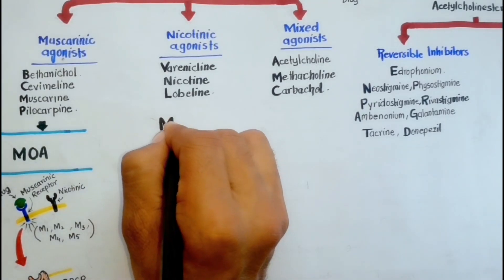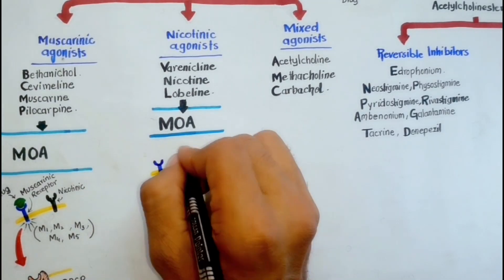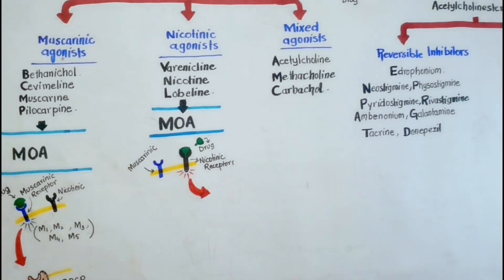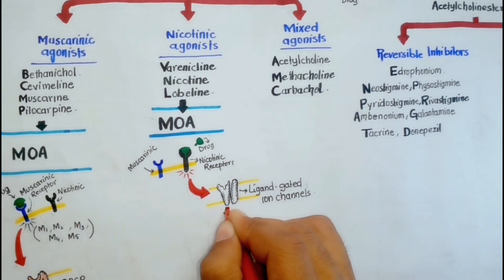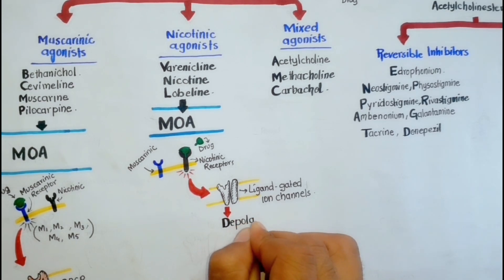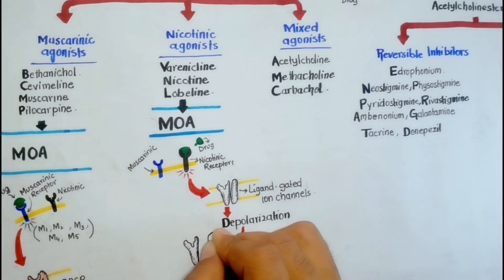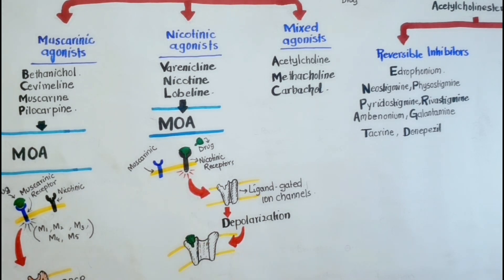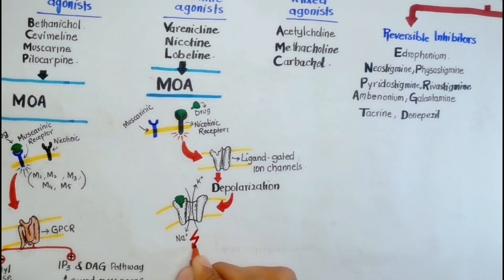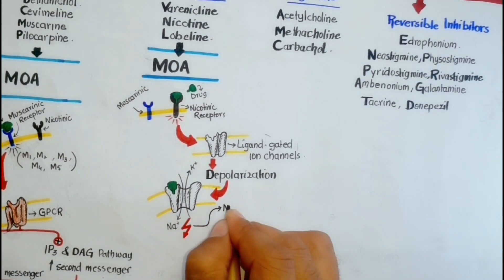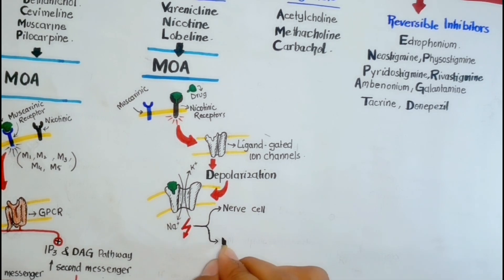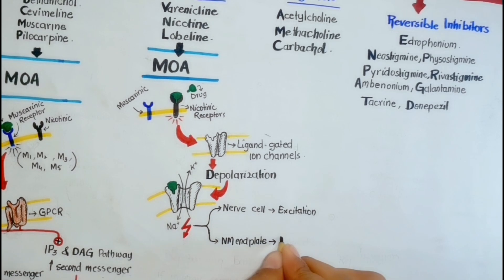In the case of nicotinic agonists, which act on nicotinic cholinoceptors only — which are ligand-gated ion channels — when an agonist binds to them it results in depolarization of the post-synaptic site. Nicotinic agonists open up the ion channels linked with these receptors, through which sodium and potassium ions diffuse rapidly down their concentration gradients, resulting in depolarization of a neuron or neuromuscular junction, ultimately leading to neuronal excitation or muscle contraction respectively.